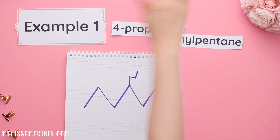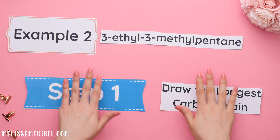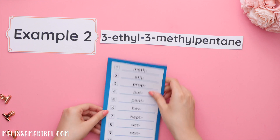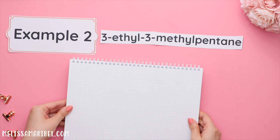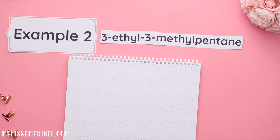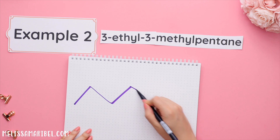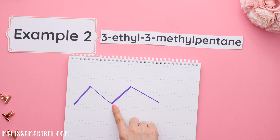Here's example two. Step one: draw the longest carbon chain. Our longest carbon chain is pentane — pent meaning five. Let's draw five carbons, remembering the trick where we count to one less than the number of carbons we want. So one, two, three, four — and we actually drew one, two, three, four, five carbons.